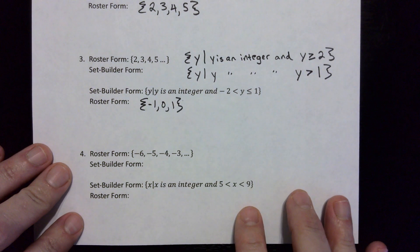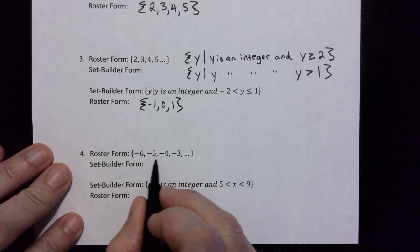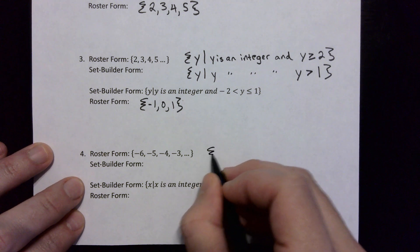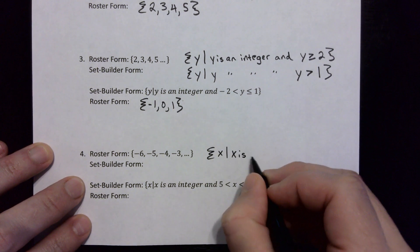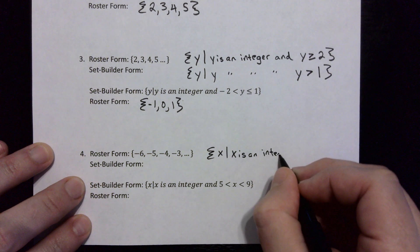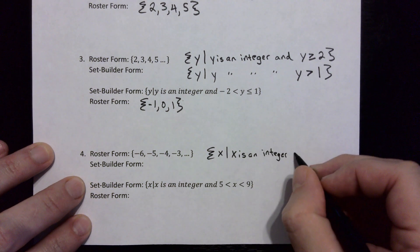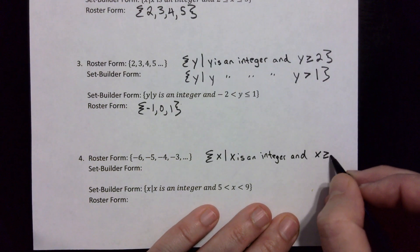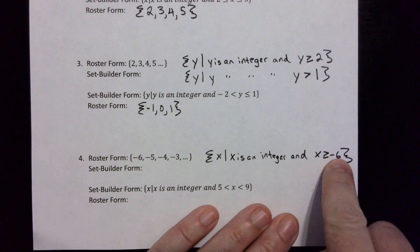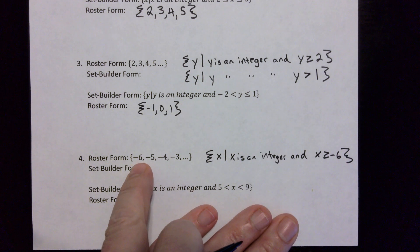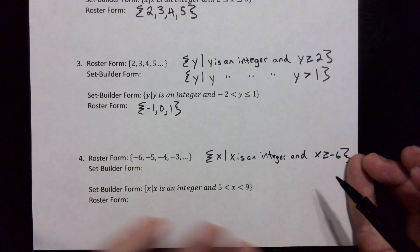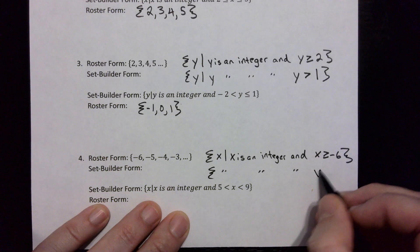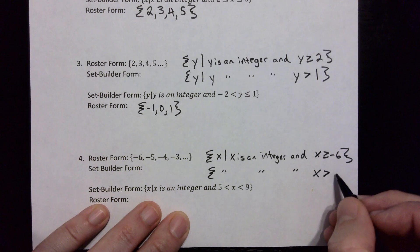The last problem has roster form negative six, negative five, negative four, negative three, dot dot dot. This would be x such that x is an integer and x is greater than or equal to negative six — the line means it includes negative six, which is on our roster. The other way to write it without the equal-to sign would be x is strictly greater than negative seven.